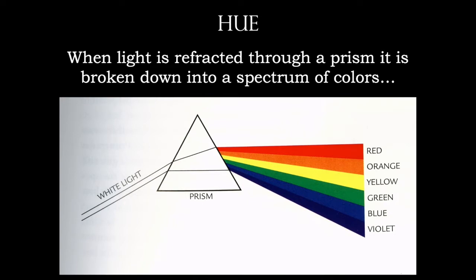When light is refracted through a prism, it's broken down into a spectrum of six colors: red, orange, yellow, green, blue, and violet. They always emerge in this order. However, you don't have to memorize them in this particular order — later in the lecture I'll show you a different way of memorizing them to make it easier.